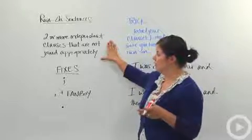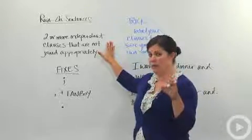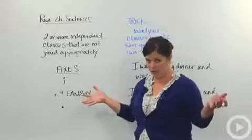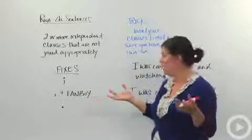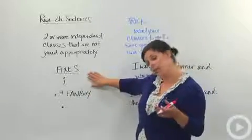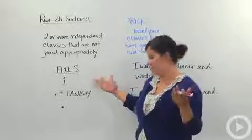The definition of a run-on sentence is two or more independent clauses that are joined inappropriately. That could mean a variety of things, but the good thing to know is that the three easy fixes are right here.